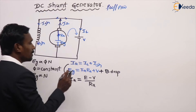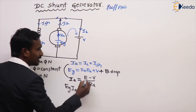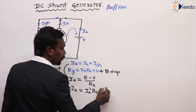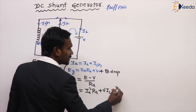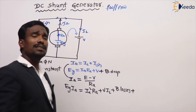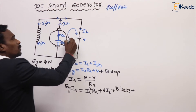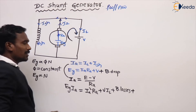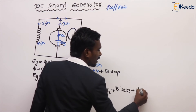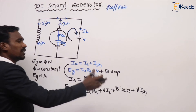What is the power equation? Multiplying with current: the generated power is EG × IA. The armature copper loss is IA² × RA. The output power is V × IL. We also have brush losses. Apart from this, there is another loss — the shunt field copper loss, which is V × ISH, or equivalently ISH² × RSH.